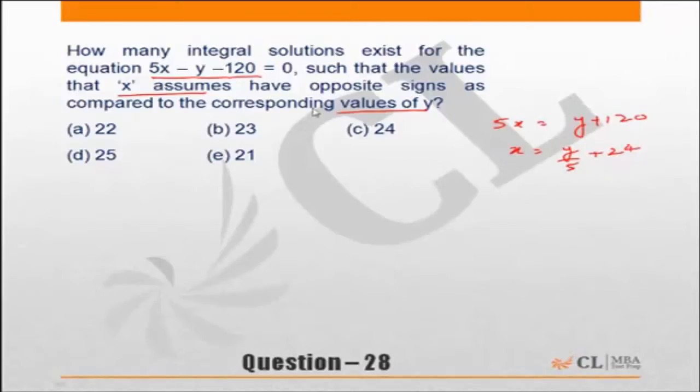Now the first thing is we are looking for integral solutions only, that means both x and y have to be integers. This means y has to be a multiple of 5. If y is not a multiple of 5, then y/5 will be a fraction.